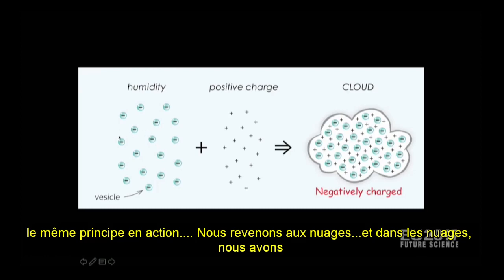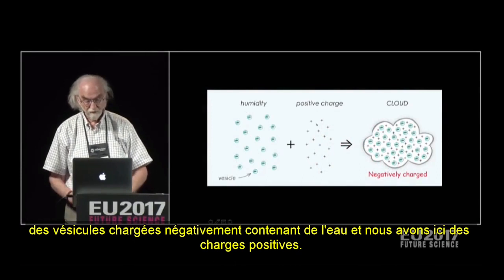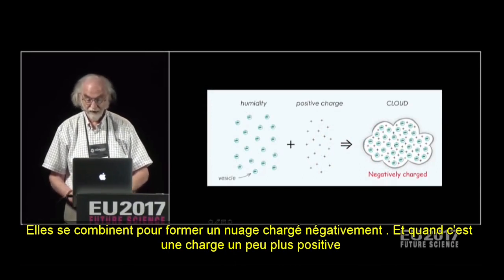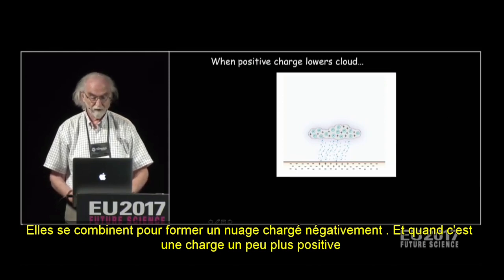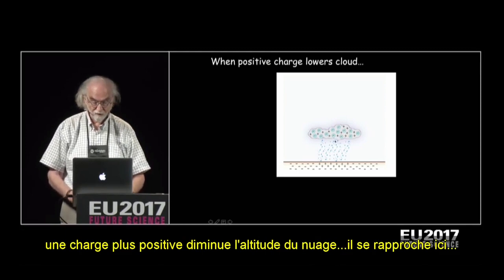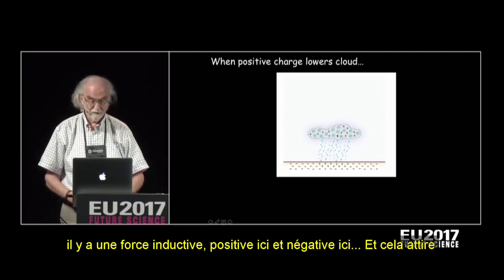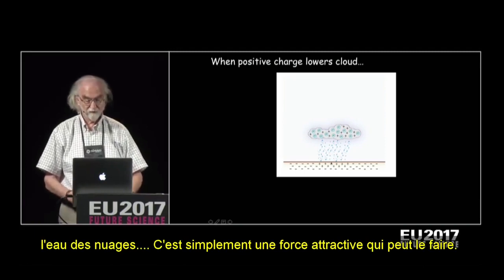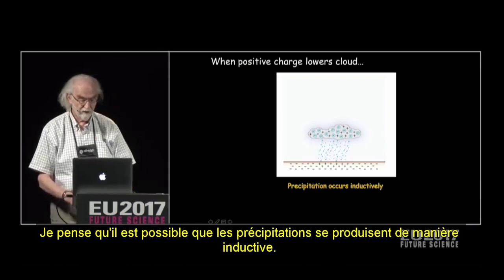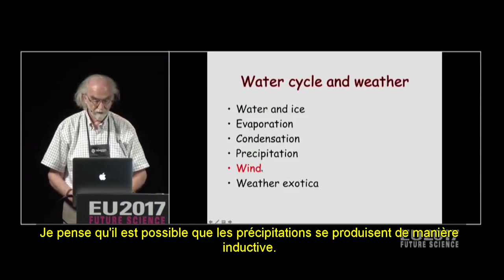We go back to the cloud. The cloud has negatively charged vesicles containing the water, and we have positive charges. They come together to form a negatively charged cloud. And when more positive charge lowers the cloud — it comes closer to here — there's an inductive force: positive here, negative here. This pulls the water from the cloud. It's a simple pulling force. So I think a possibility is that precipitation occurs inductively.